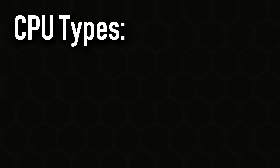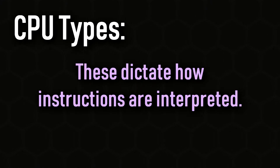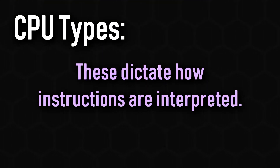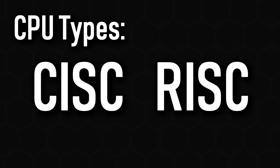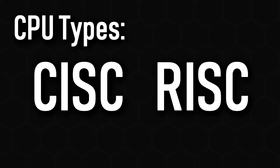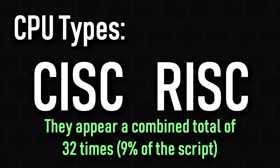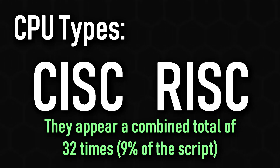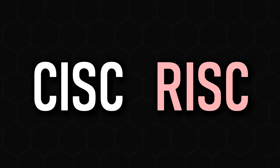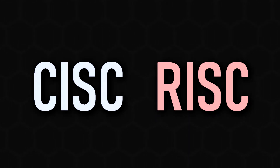When it comes to processors there are two different types that dictate exactly how instructions are interpreted and processed: RISC and CISC. Just a quick thing to note — the words RISC and CISC will be used a lot, so to make it less confusing, all subtitles concerning RISC will be in red and all those to do with CISC will be in blue.